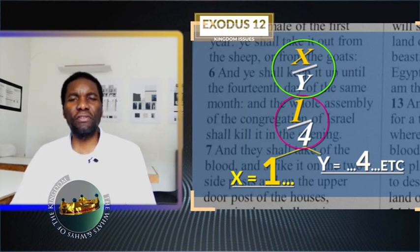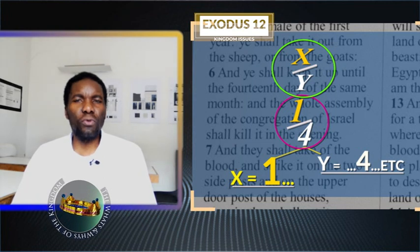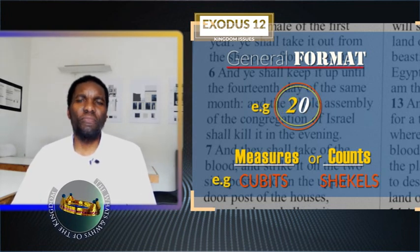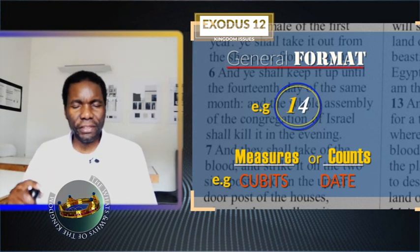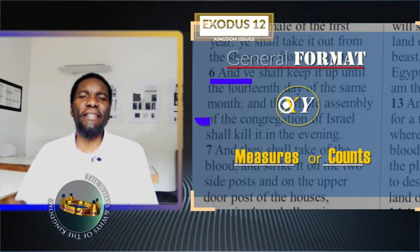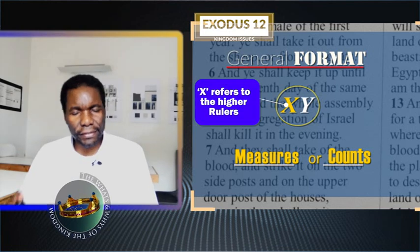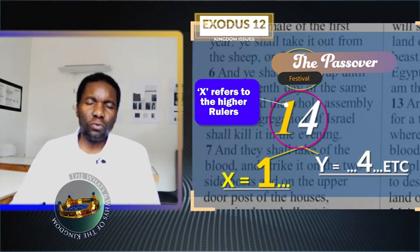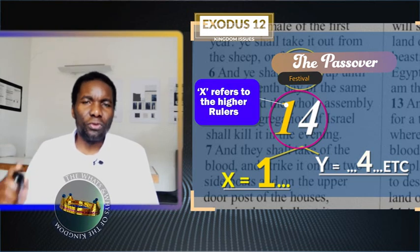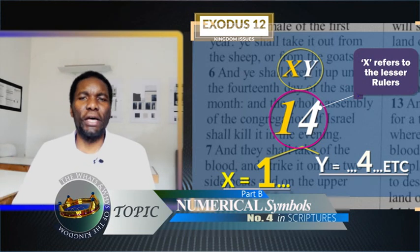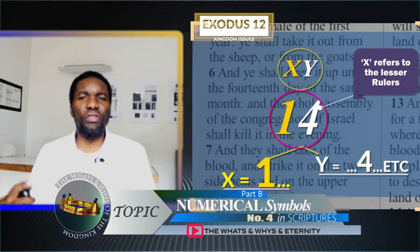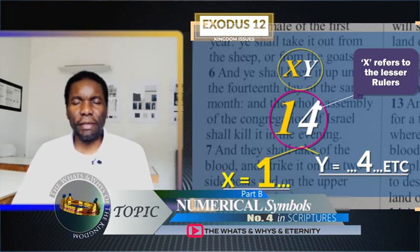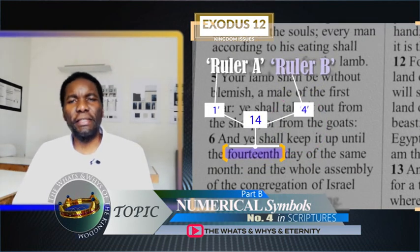These figures are specified by context of sacred structures, days of observance, or counts of offerings, besides other numerous cases concerning sacred rituals. Rituals involving counting or measures signify elements or specifics about rulers. The higher ruler in these double digits is given as the first part of that measure. In the 14th day of the Passover, the higher ruler is given as the one, and the lesser ruler is given by the second number — that is the number four.